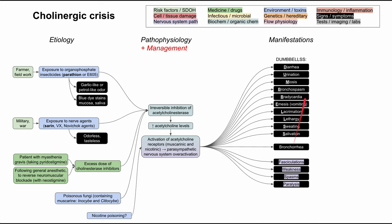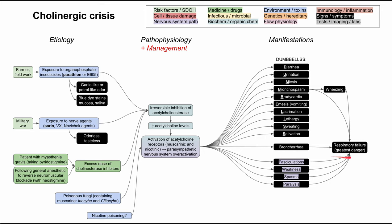These are all serious, but the most serious outcome is respiratory failure, which puts the patient at the greatest danger. Several factors contribute: neuromuscular weakness makes it harder to breathe, bronchospasm and wheezing make it harder to get air in, and bronchorrhea can cause aspiration with fluids entering the lungs. Respiratory failure is the greatest danger in a cholinergic crisis, and securing it is the first priority in management.